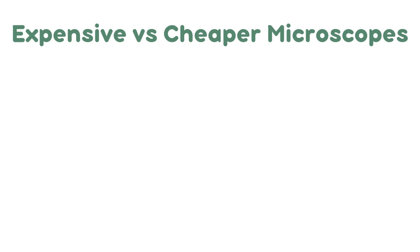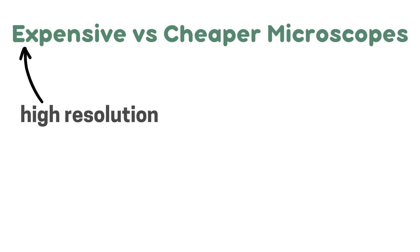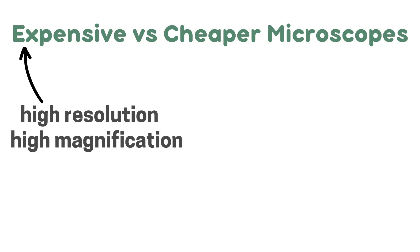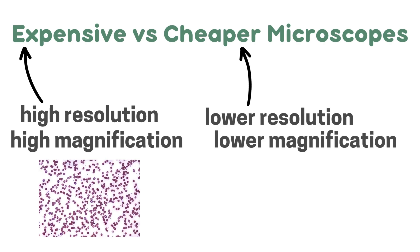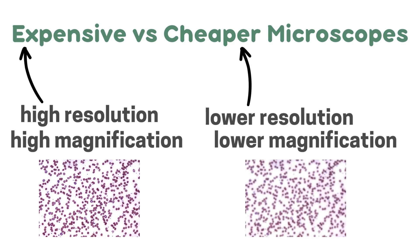Now we're going to have a look at expensive versus cheap microscopes. An expensive microscope will have a higher resolution and a higher magnification, and a cheaper microscope will have a lower resolution and a lower magnification. This is a blood smear under an expensive microscope — it has high resolution because you can see the individual blood cells, and a high magnification. This picture is from a cheaper microscope. Yes, the magnification is the same, but the resolution is a lot lower as it appears more blurry.